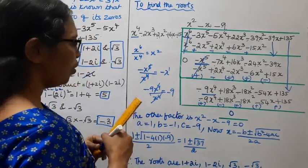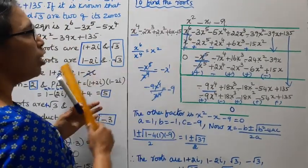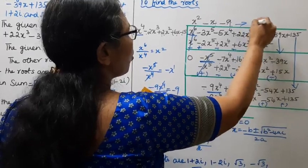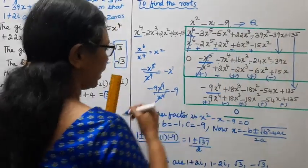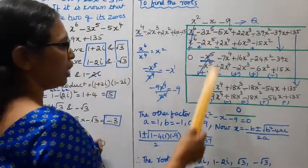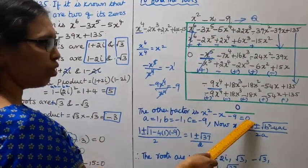After dividing the original degree-6 polynomial by (x²-2x+5)(x²-3), the quotient — the other factor — is x²-x-9, equal to 0.